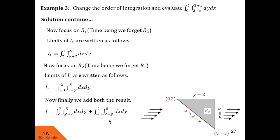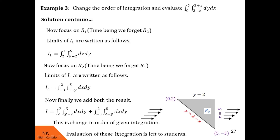Now we combine these results. I = double integral dx dy with inside limits y minus 2 to 5 and outside limits 2 to 7, plus double integral dx dy with inside limits 2 minus y to 5 and outside limits minus 3 to 2. This is the change in order of integration of the given integral. I am leaving the evaluation part for the students. Now we go to the next example.